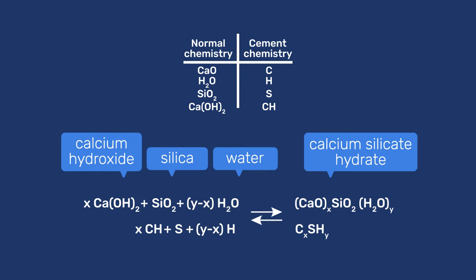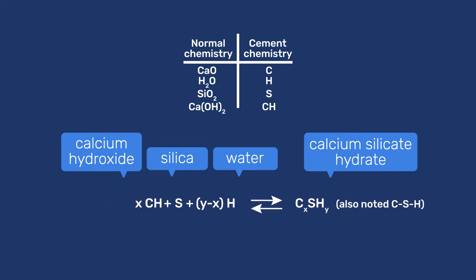The values of x and y can vary depending on the circumstances, which is why we usually note calcium silicate hydrate as C-S-H. One well-documented case of C-S-H is found in modern cement with values of x and y being respectively 1.7 and 4. This gives 1.7CH + S + 2.3H gives C1.7SH4.